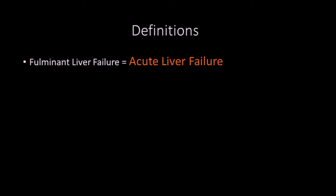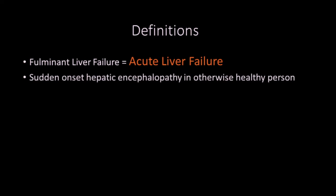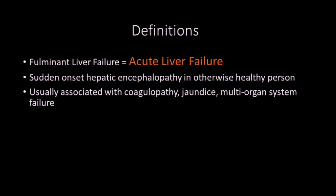Fulminant liver failure is the traditional name for the entity we'll be discussing, but of late it has been changed and is now known under the umbrella term of acute liver failure, which is how we will refer to it for this talk. The entity is the sudden onset of hepatic encephalopathy in an otherwise healthy person — quite a dramatic event. Because it is liver failure, it is typically associated with coagulopathy and jaundice, and may very rapidly progress to multi-organ system failure.